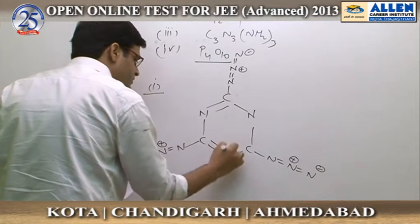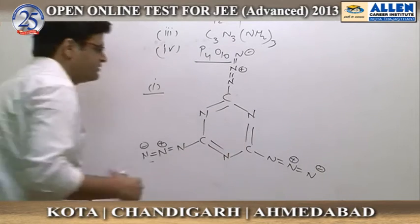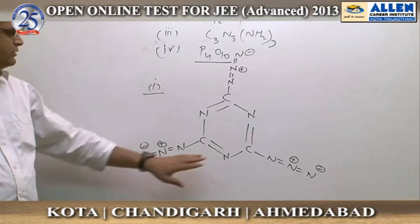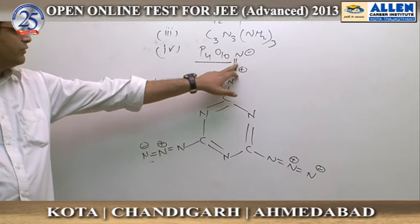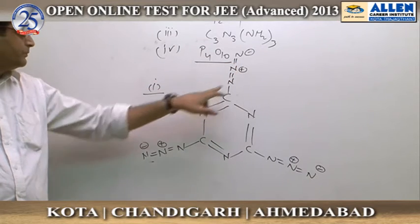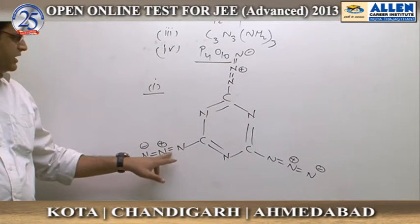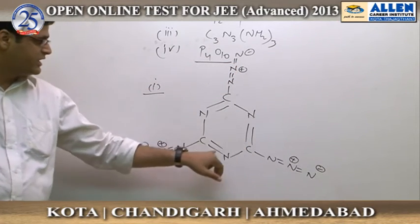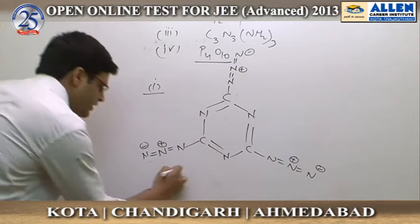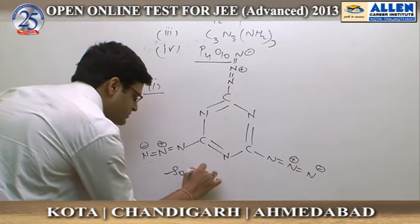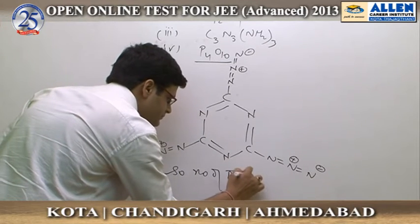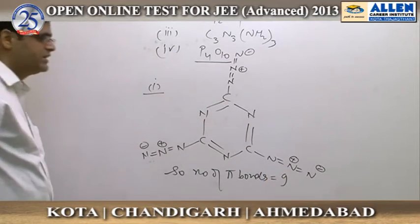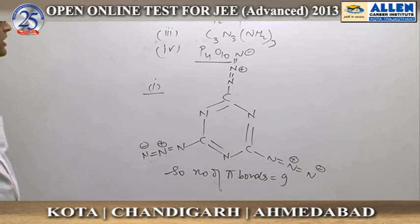Now, calculating the number of pi bonds in the first structure: counting 1, 2, 3, 4, 5, 6, 7, 8, 9. So the number of pi bonds is 9.